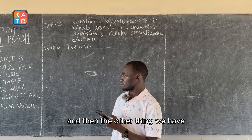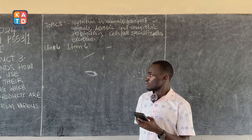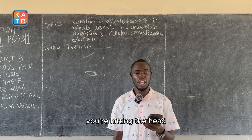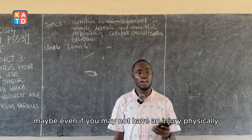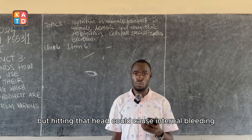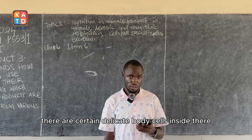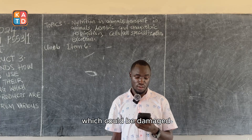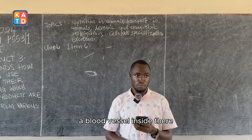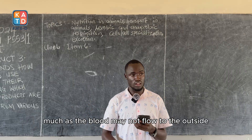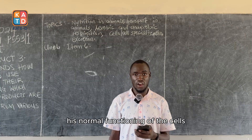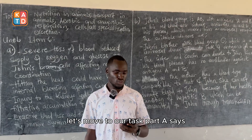Hitting the head could have caused internal bleeding. Even without a visible external injury, hitting the head can damage delicate cells inside. If any blood vessel ruptures internally, blood may not flow outside but internal bleeding occurs. This internal bleeding could affect the normal functioning of the brain cells and contribute to loss of consciousness.